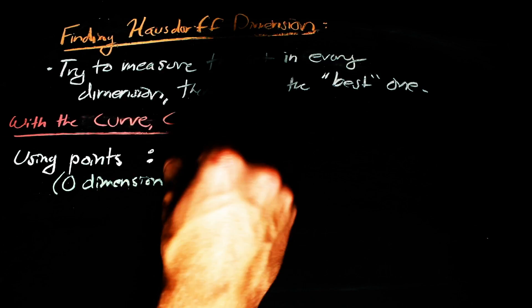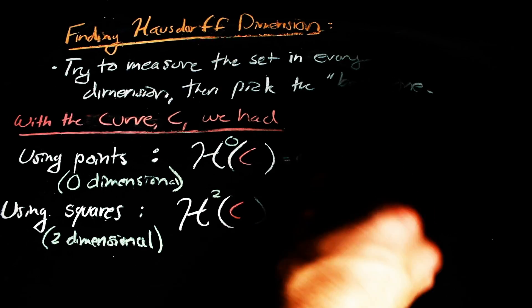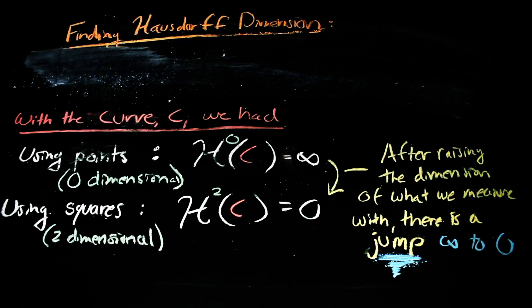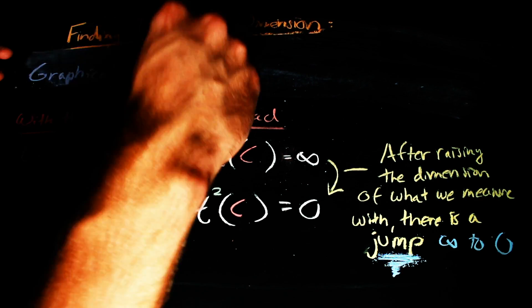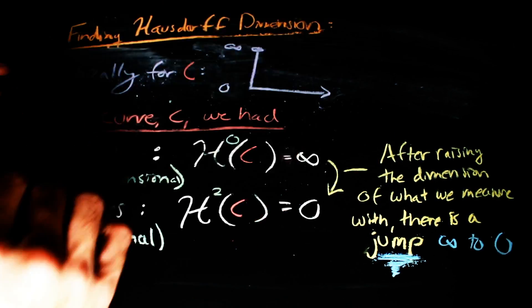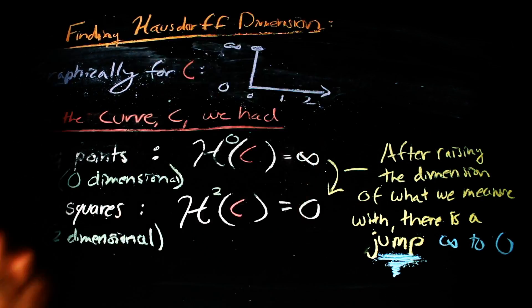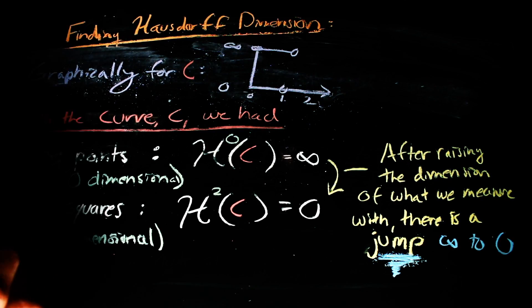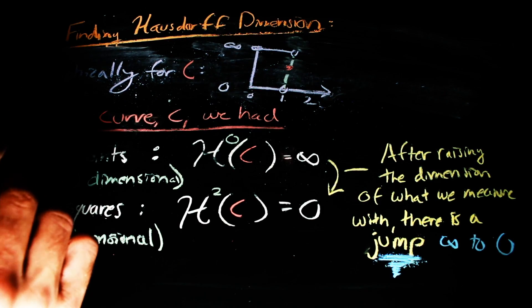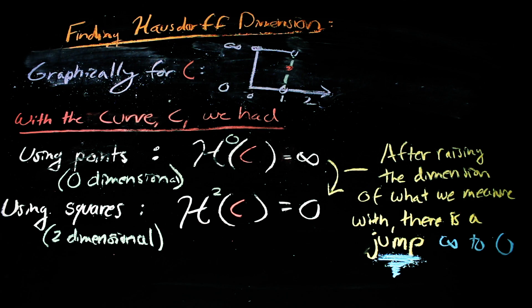Notice that was essentially what we did with the curve. We can graph the measure of the curve as a function of what dimension we are using to measure it. Anything lower dimensional than a line or dimension less than one would be too small, in a sense, to measure the curve, so those measures are all infinity, but anything higher dimensional or dimension greater than one used to measure the curve would be too big, in some sense, so those measures are all zero.